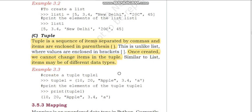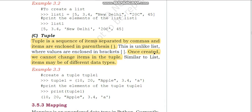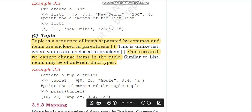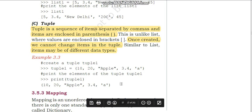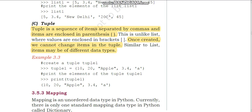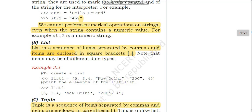There is also tuple, which is a sequence again, but the difference is that in tuples we write in round brackets (parentheses) instead of square brackets. Also, unlike list, once created you cannot change the items in a tuple — the values are fixed. For example, tuple1 has values 10, 20, 'apple', 3.4, 'a' — all different data types under one variable. The only differences between list and tuple are: in tuple you cannot change the values, and tuple uses round brackets while list uses square brackets.